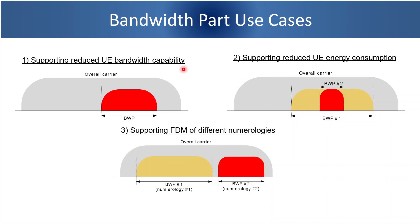Let us look at various use cases of bandwidth part. The first use case is supporting reduced UE bandwidth capability — meaning a user equipment not having support of the full bandwidth can also be designed. This is important for IoT devices, which need to be less complex, energy efficient, and cheap. Such IoT devices with a 5G chipset can be designed to support only a small bandwidth, a small BWP.